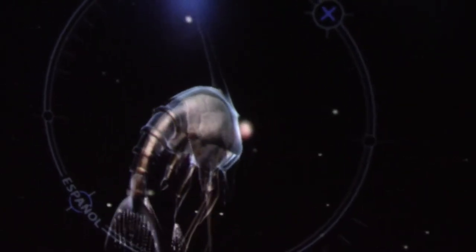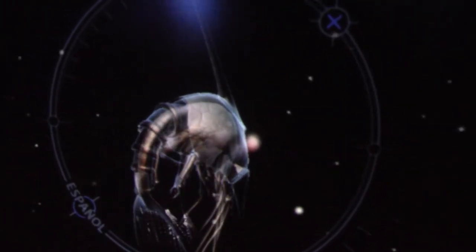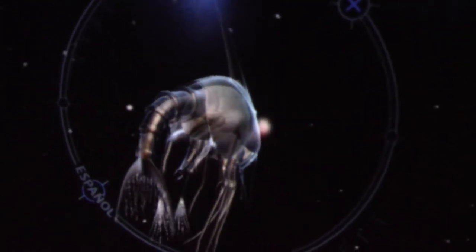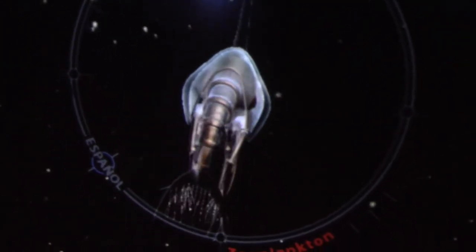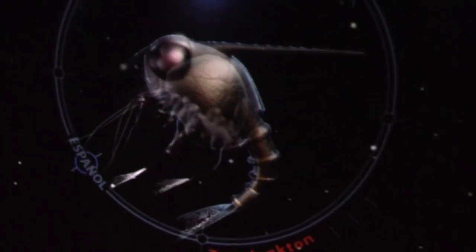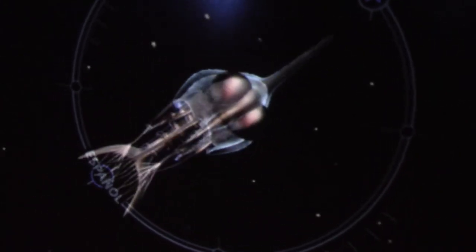We know that life on Earth first emerged in the ocean from life forms similar to some of these microscopic creatures. Starting with single-cell organisms, life slowly became more complex, eventually resulting in the animals we see today.